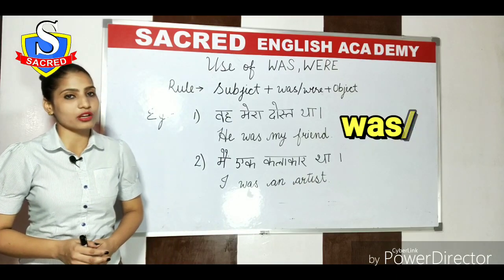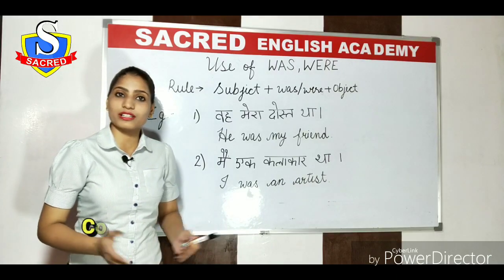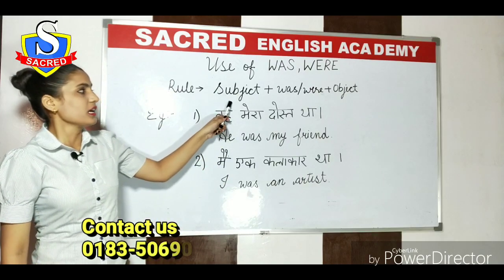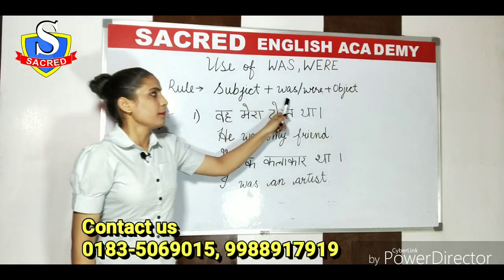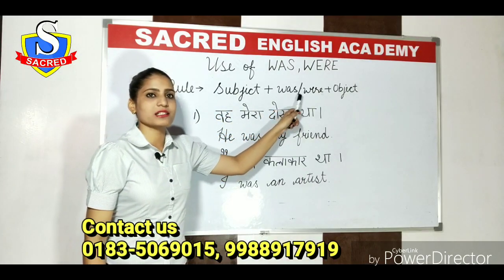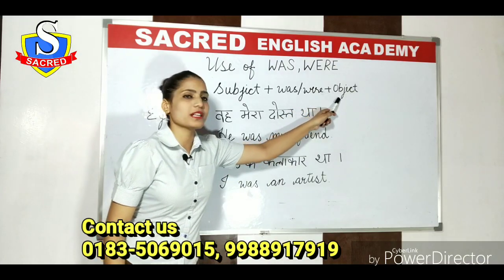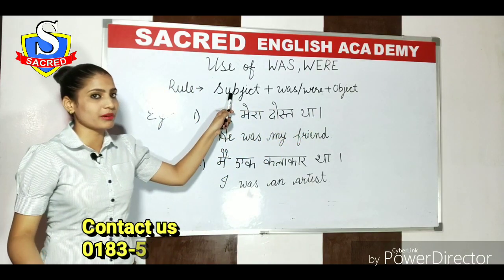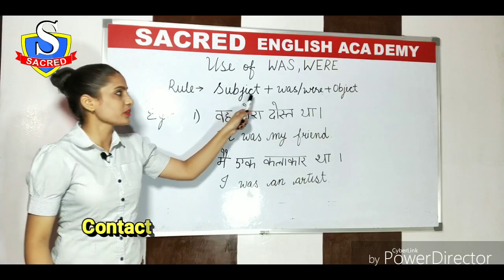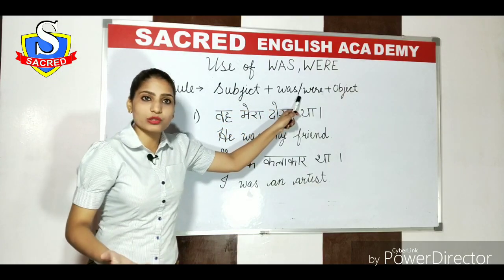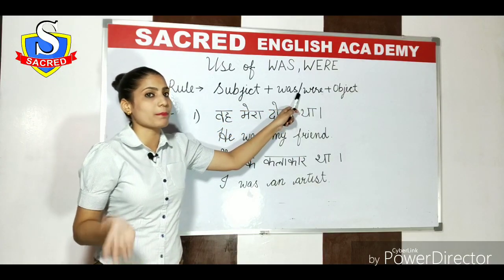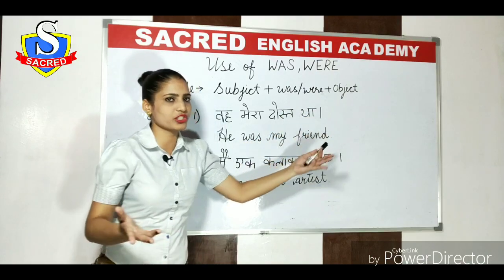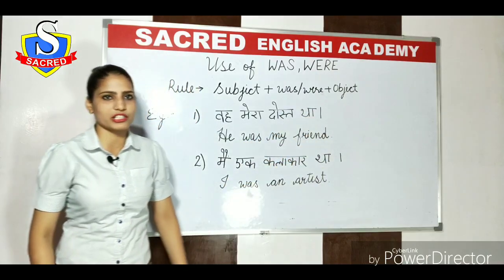First of all, I'll be talking about the rule. What does the rule say? Subject plus 'was' or 'were' plus object. Subject means jiske baare mein baat ho rahi hai — that is your 'was'/'were'. Matlab, jab aap past ki baat karenge. And this is the object — jis cheez ke upar baat ki ja rahi hai.